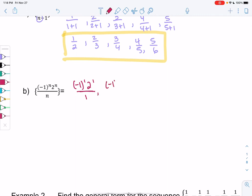So then we'll get negative 1 to the 2, 2 to the 2, over 2. Negative 1 to the 3, 2 to the 3, over 3. Again, just plugging in for n. Negative 1 to the 4, 2 to the 4, over 4. And then negative 1 to the 5th, 2 to the 5th, over 5. And that is my sequence. But let's see if we can simplify it a little bit.